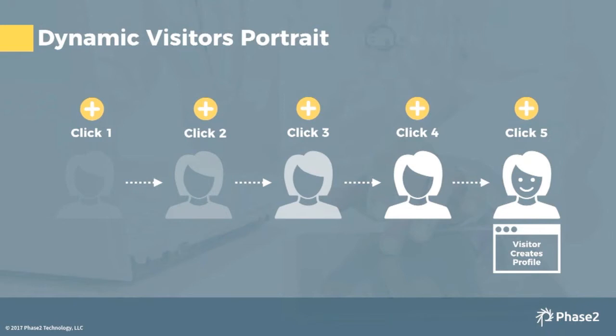You can imagine a user coming to your website anonymously — they're not logged in, you really don't know who they are — but as they start to engage with your website, you can start to fill out a profile of who they are and what their interests are. Imagine someone doing a Google search from their phone, looking for healthcare providers in their area. They land on your homepage and click an article about heart health tips. Now you know they've come from a mobile device, you know their area, and you know they're interested in heart health.